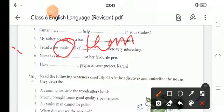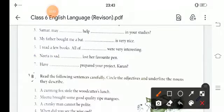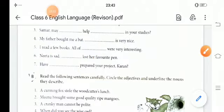Nita is sad. Nita is a girl. Nita is sad. She is a girl. Then it is a she. She lost her favorite pen. Then, Have you prepared your project? Karan.